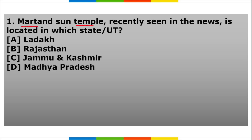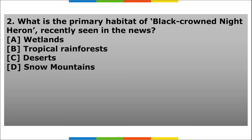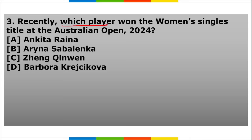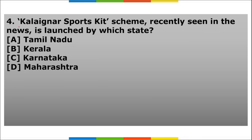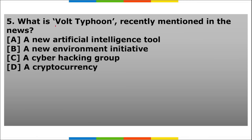Homework questions: First, Martand Sun Temple recently in news is located in which state? Second, what is the primary habitat of the Black-crowned Night Heron recently in news? Third, which player won the Women's Singles title at the Australian Open 2024? Fourth, the Khylo Sports Kit Scheme recently in the news is launched by which state? Fifth, what is Volt Typhoon recently mentioned in the news?